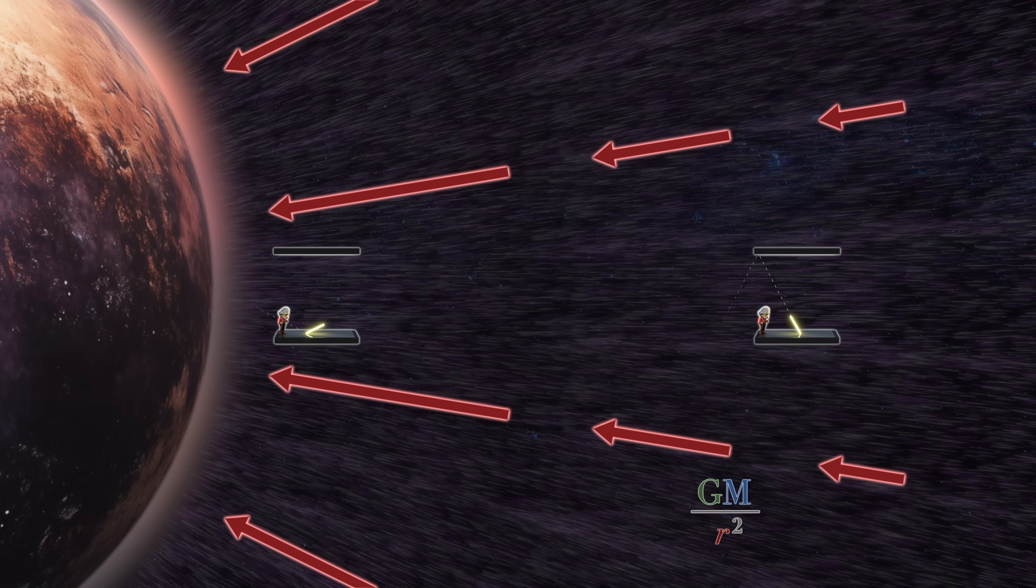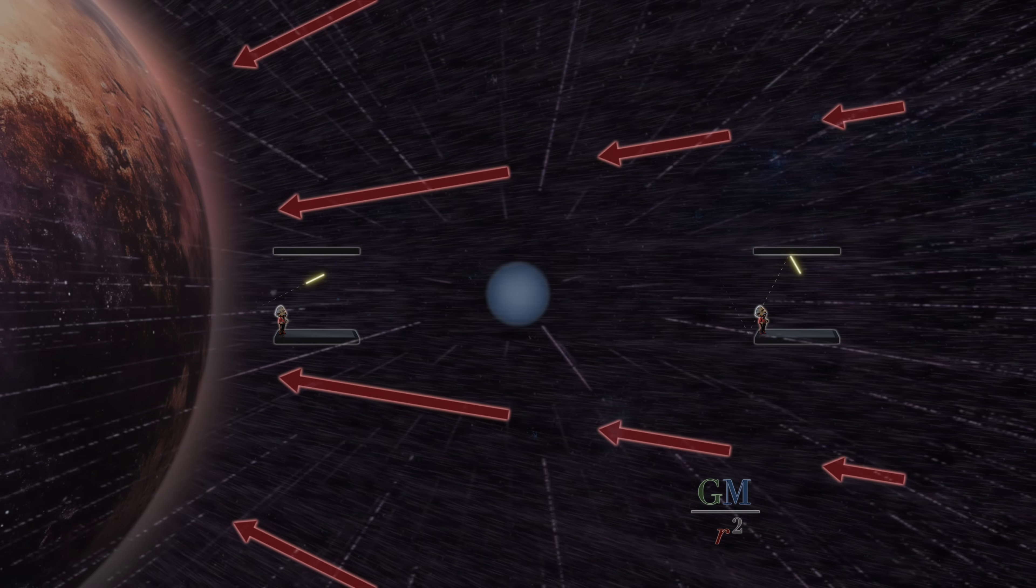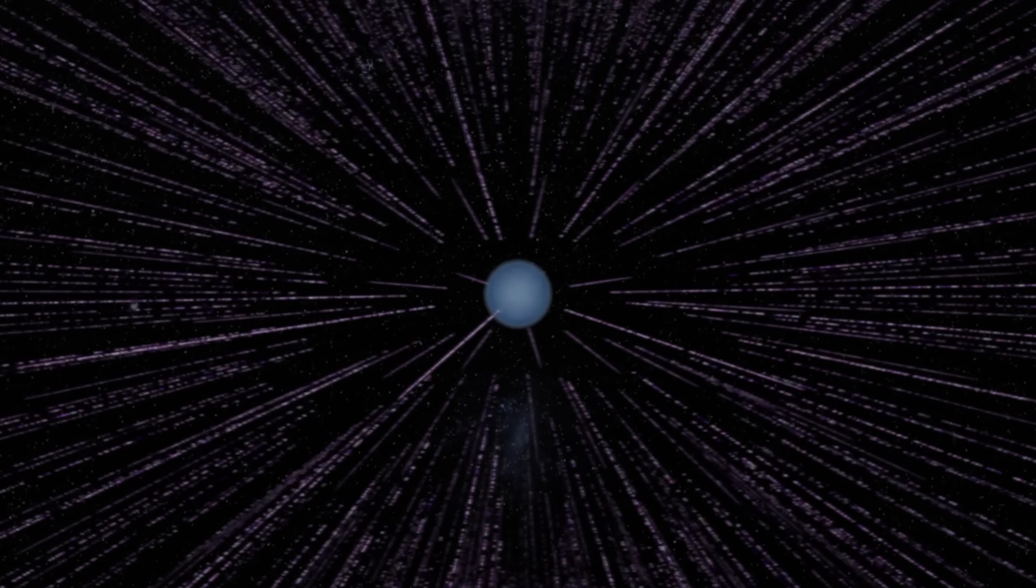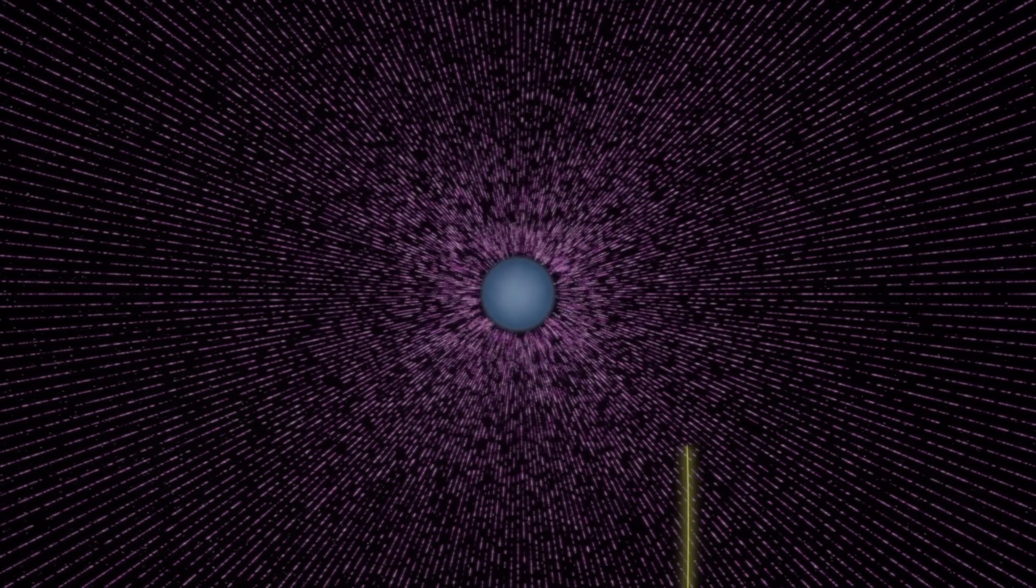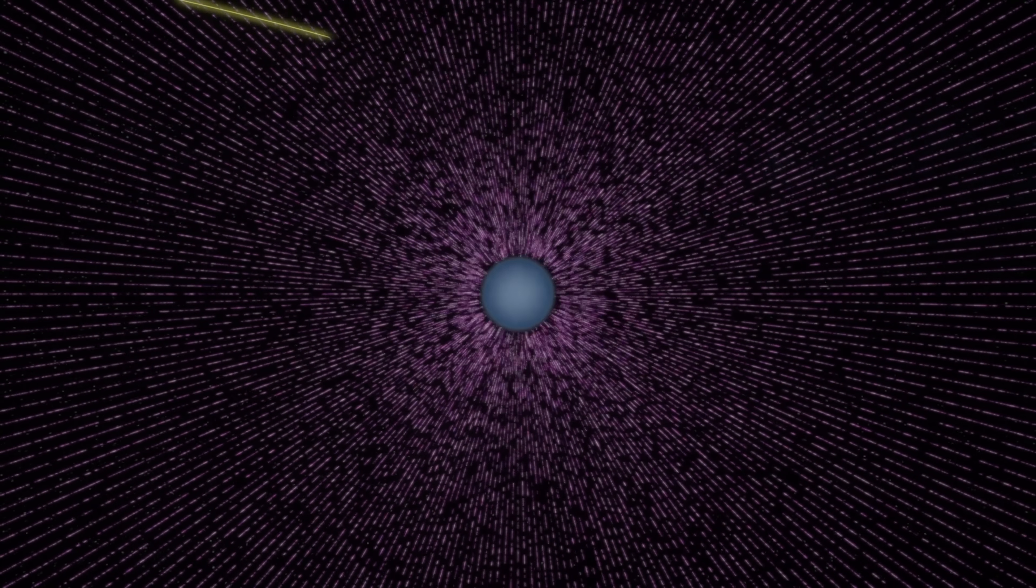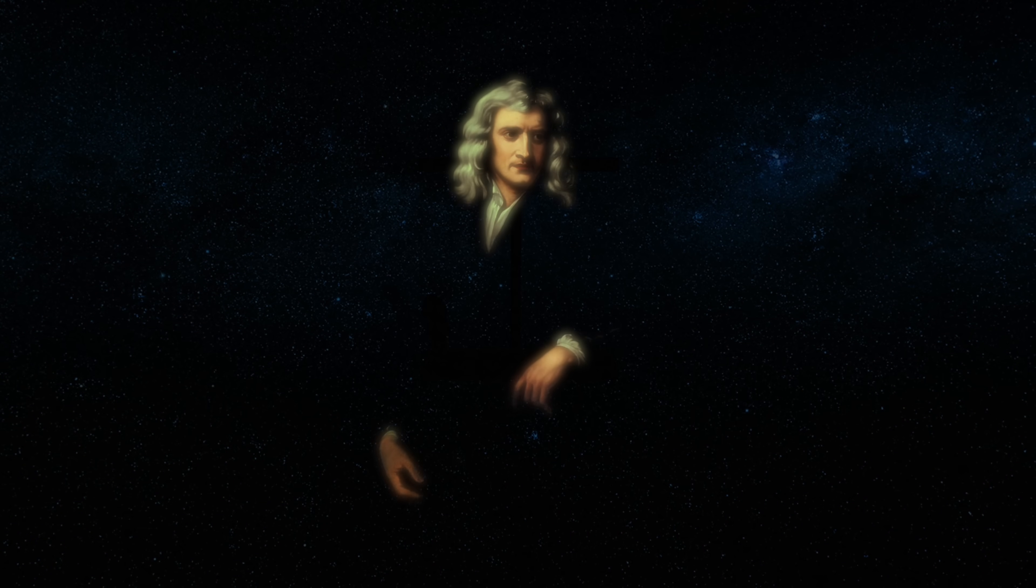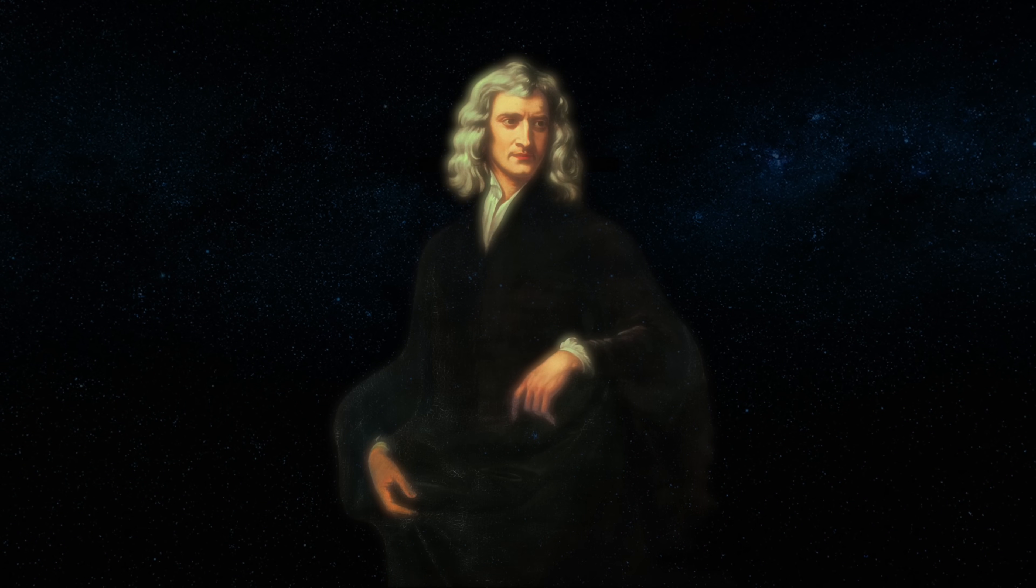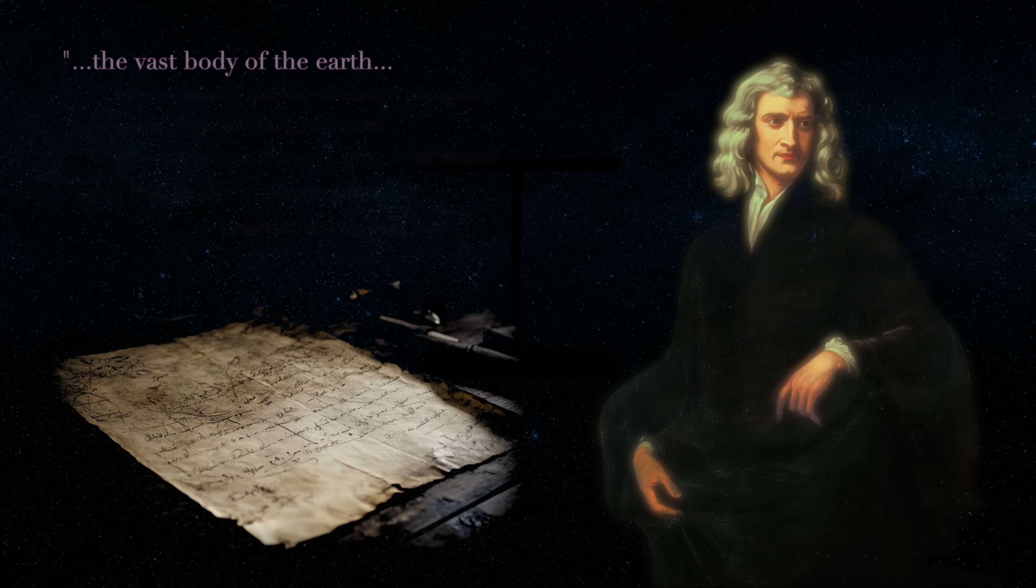This ontological conception of gravity is known as flowing space, or the river model. And, surprisingly, it's not at all new. In fact, its roots extend as far back as Isaac Newton, who first tentatively proposed the idea in a private letter to a colleague.